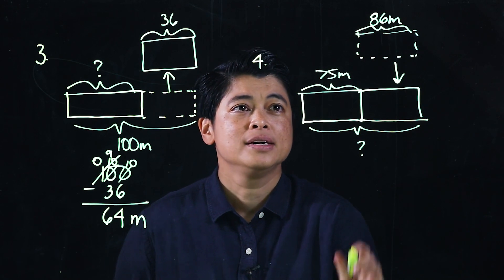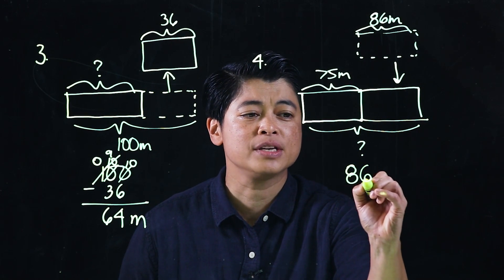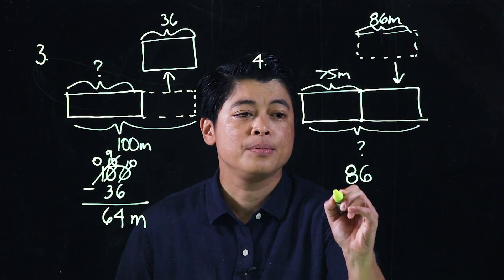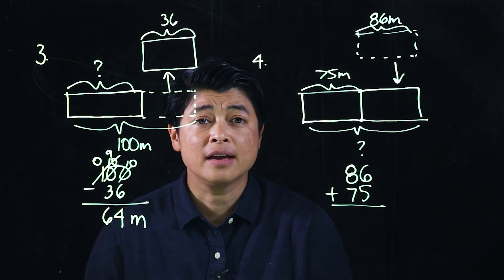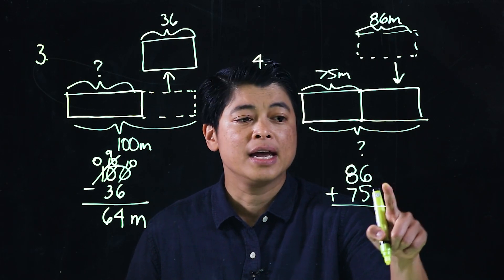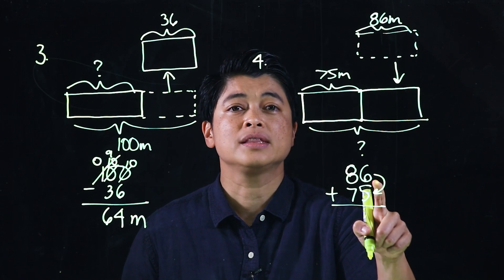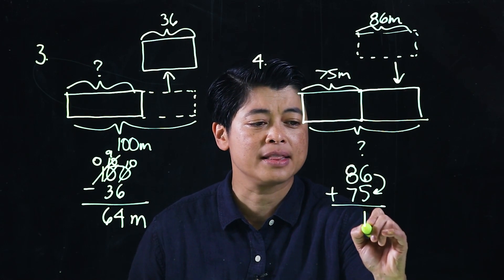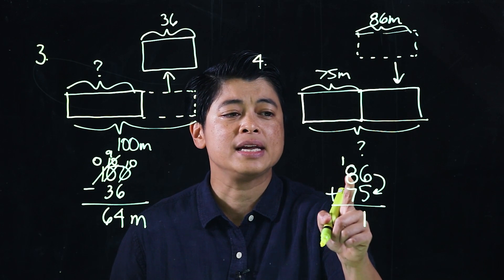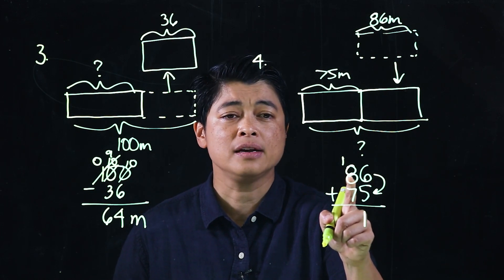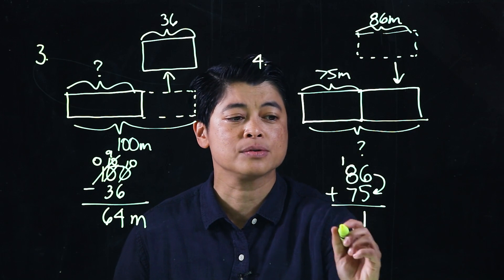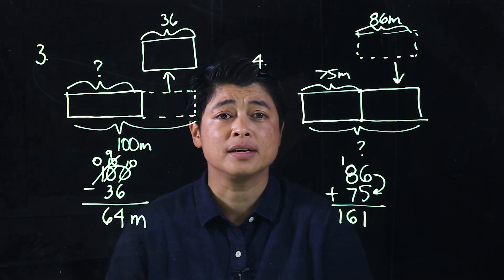Since what's missing is the whole, this is an addition problem. For consistency, we start with the bigger number and add 75. We need 4 more to make it to 10, giving us an extra 1. So 15 plus 1 makes it 161. Jamie now has 161 meters of cloth total.